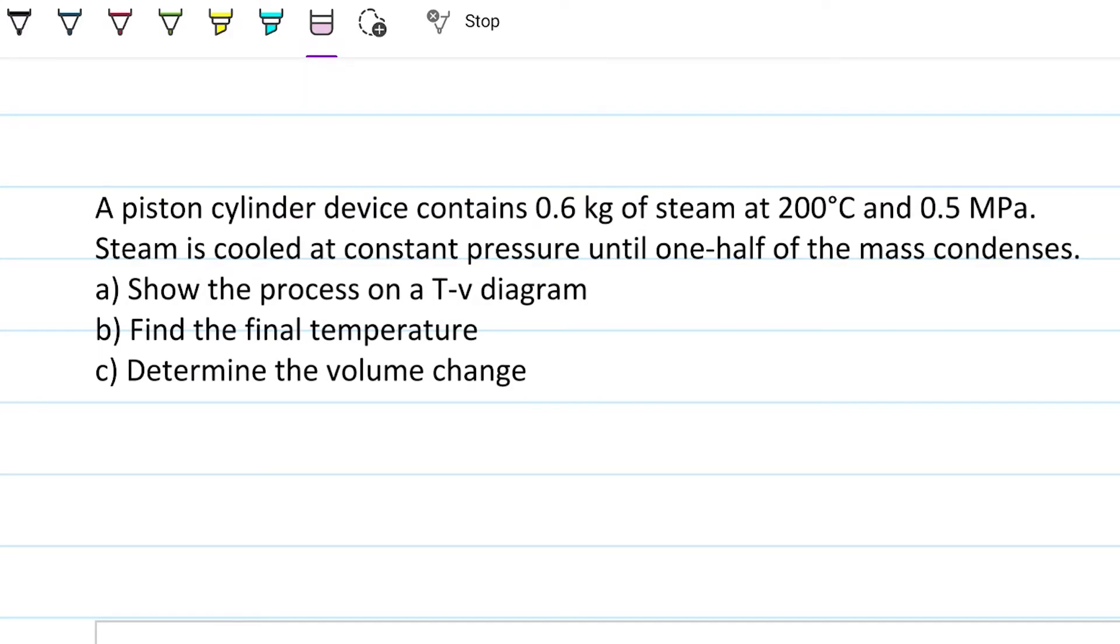Today we're looking at pure substance problems for thermodynamics. The problem statement reads: A piston cylinder device contains 0.6 kilograms of steam at 200 degrees Celsius and 0.5 megapascals. Steam is cooled at constant pressure until one half of the mass condenses. We are to show the process on a TV diagram, temperature specific volume diagram, find the final temperature and determine the volume change.